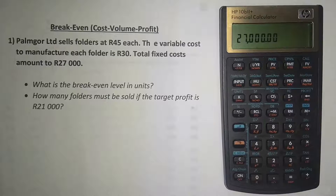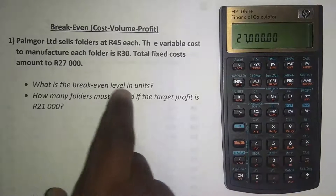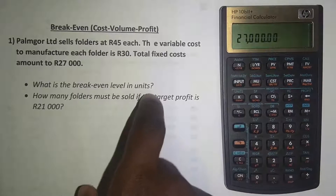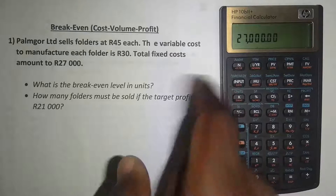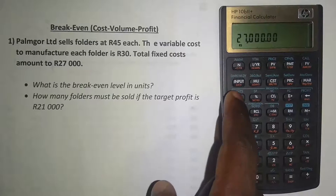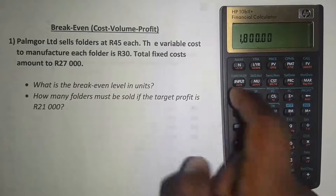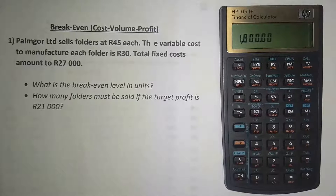For the profit — we want the break-even level in units, and we know that break-even means we've neither made a profit nor a loss. So we leave the profit as it is. What we want is the break-even level in units, which is the first button — on top is written 'units'. We press the blue button and then press that button. It has given us the break-even level in units: 1800.